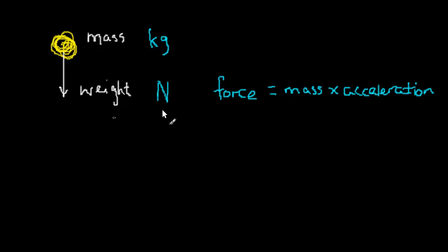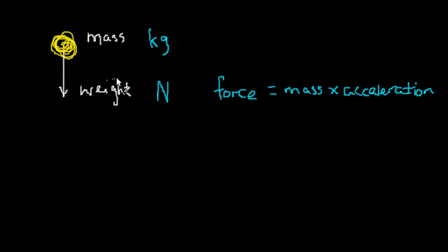Although those two ideas are completely different, if an object has mass then the earth will pull down on it, because two masses have gravity that attracts each other. So what then is the connection between the kilogram and the newton?